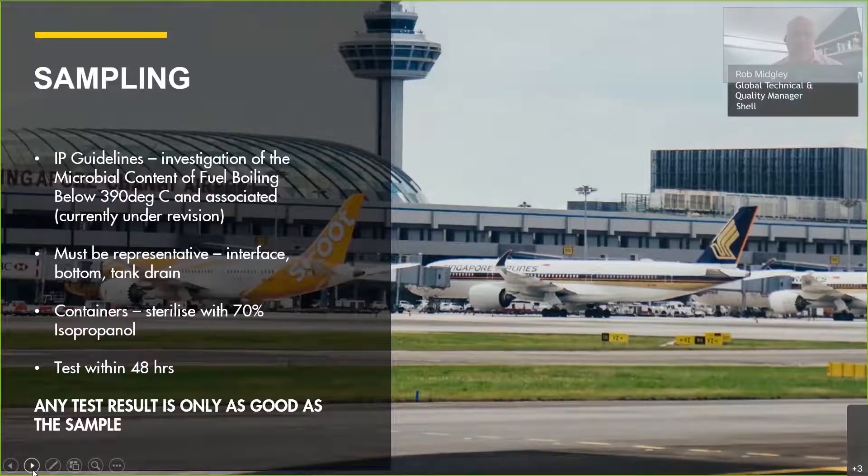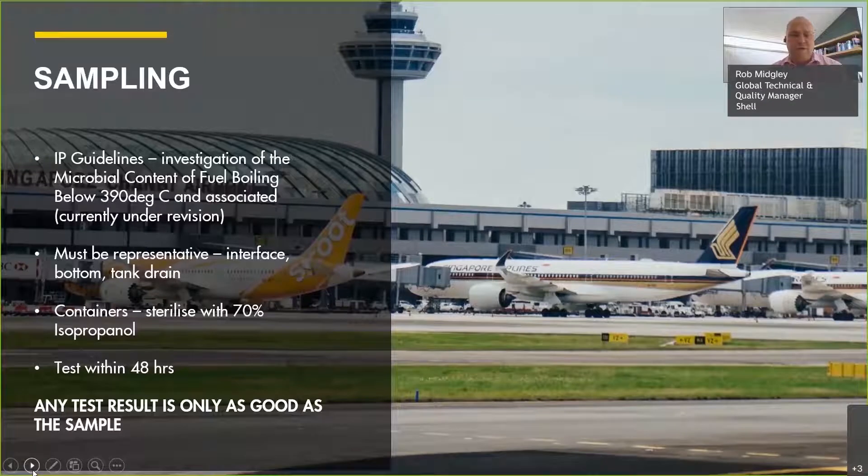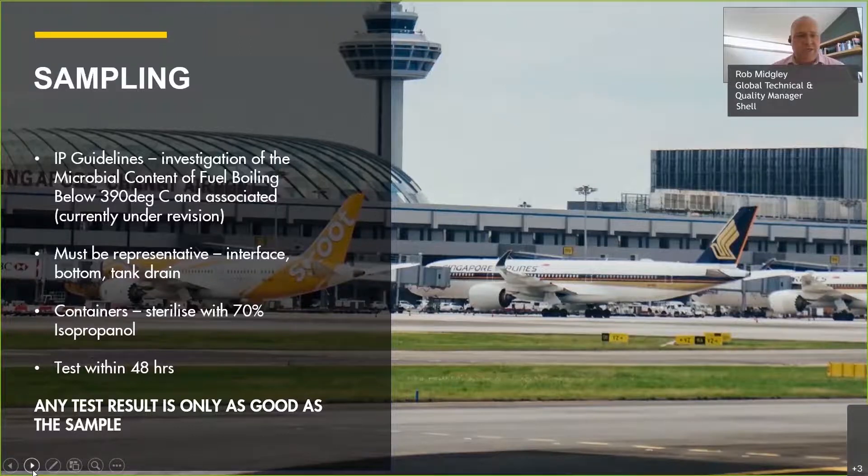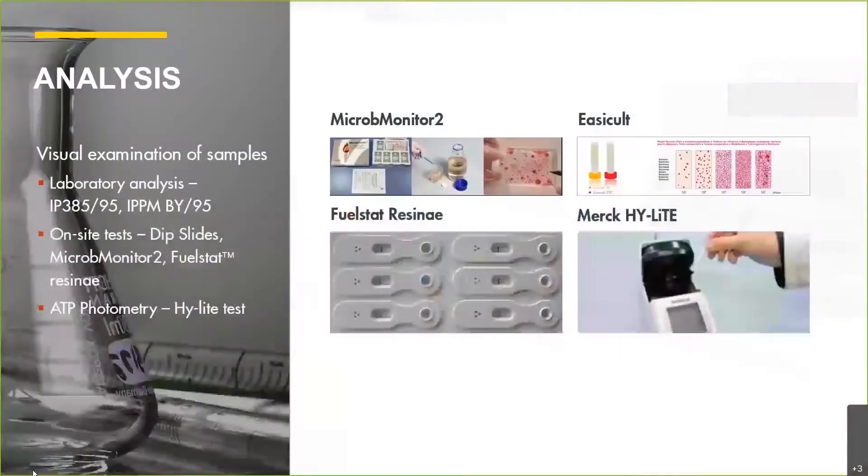Sampling, more than any other fuel property, is really critical for getting good accurate sampling for microbial testing. So drain points, flexible hoses, sample containers, make sure they're sterile before you're using them.